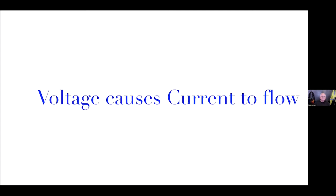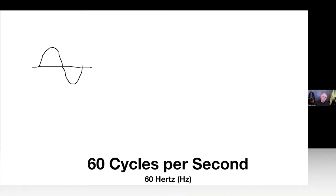Let's begin with the sine wave. As voltage builds up in the system, it forces current to flow in the alternating current system. Then the voltage comes back down towards zero, goes through that zero reference point, and forces current in the opposite direction — that is one complete cycle. That's happening 60 times per second in our alternating current systems here in the US. In Europe it would be 50 cycles per second. The unit of measurement we have for that is hertz.